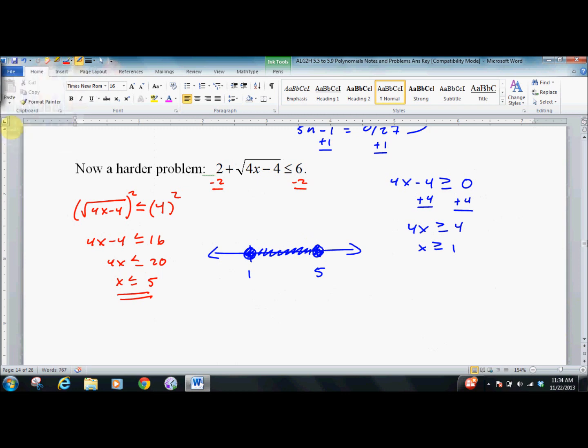But, of course, we have to check. And we do have to check these. Again, the negatives can get strange. You can have overlapping answers. You have answers that don't work. You have to check them all. Let's try a number in the middle here. Let's try 2. 4 times 2 is 8. 8 minus 4 is 4. Square root of 4 is 2. 2 plus 2 is less than 6. It works.